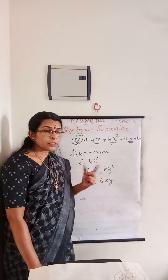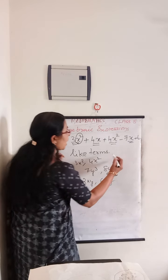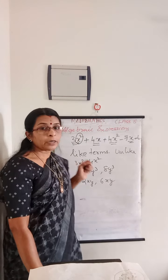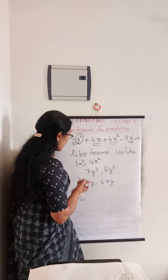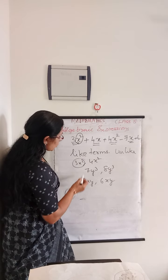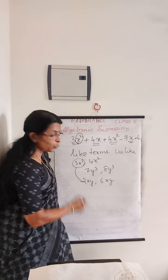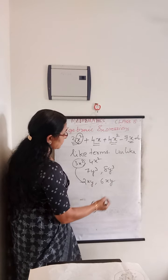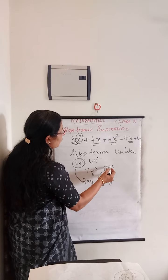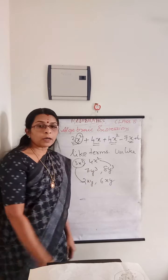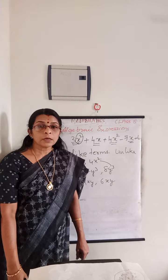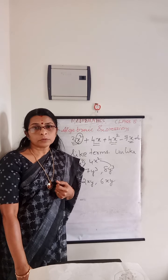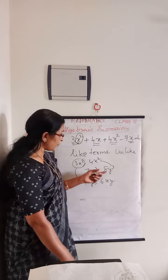Here 3x square and 4x square are like terms. y cube and 8y cube are like terms. 2xy and 6xy are like terms. Others are called unlike terms — terms with different algebraic factors. For example, 3x square and 2xy are unlike terms, and 8y cube and 4x square are unlike terms because they have different algebraic factors and different variables.